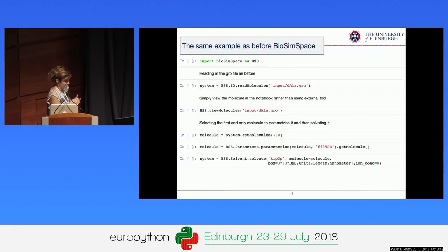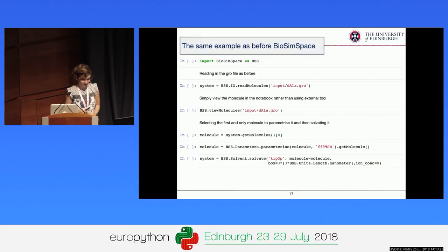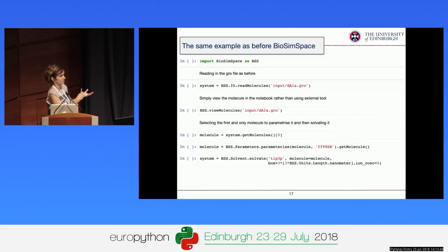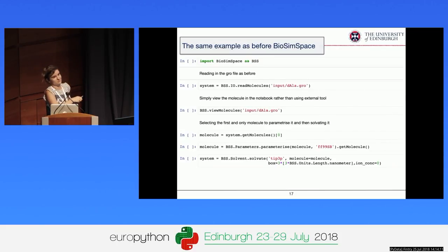This is where BioSimSpace came into play — the Python code I want to talk about. Basically, all that complicated workflow can be condensed into seven lines of Python. The idea is not to rewrite all the underlying tools, but to wrap around them and make it very easy for an academic user with some Python experience to interact with an API that lets you focus on the science. You import BioSimSpace, read the GROMACS file, visualize it, get the molecule, parameterize it with a force field, solvate it, and run it — and it doesn't matter that it was a GROMACS file; you can still run it in Amber. It's completely agnostic.